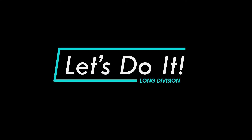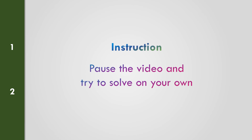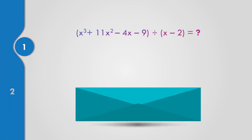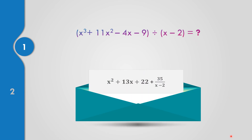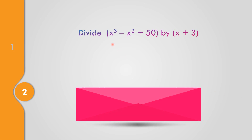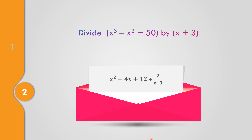Let's try it — divide polynomials using long division. Pause the video and try to solve on your own. Question number one: divide x cubed plus 11x squared minus 4x minus 9 by x minus 2. The answer is x squared plus 13x plus 22 plus 35 over x minus 2. Question number 2: divide x cubed minus x squared plus 50 by x plus 3. The answer is x squared minus 4x plus 12 plus 2 over x plus 3.